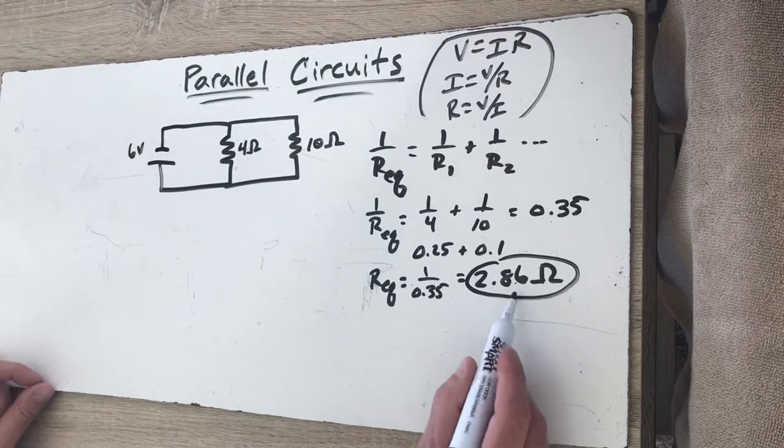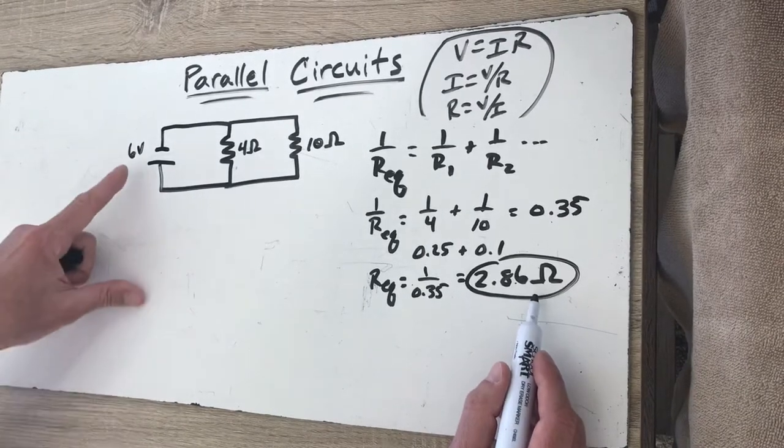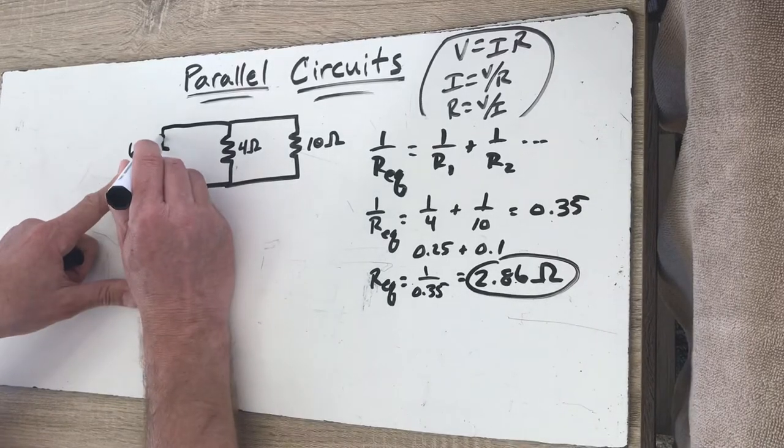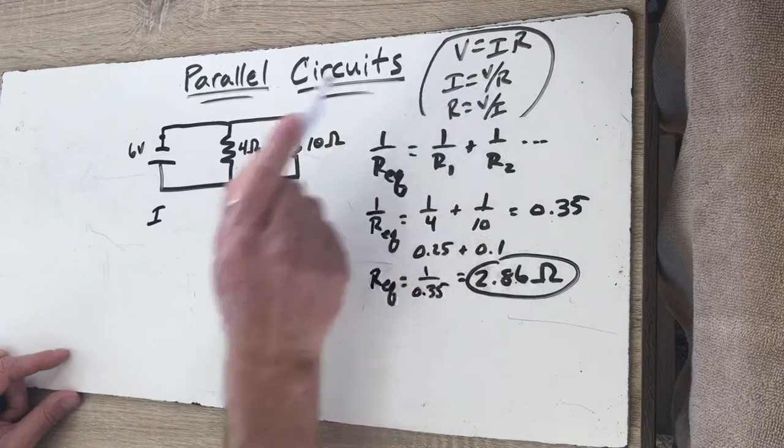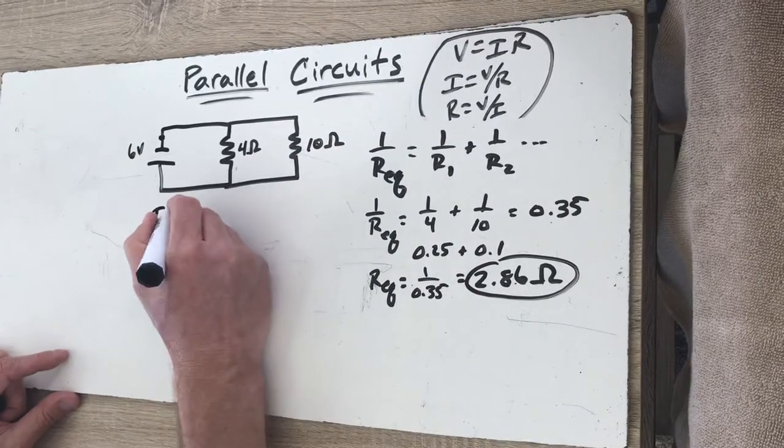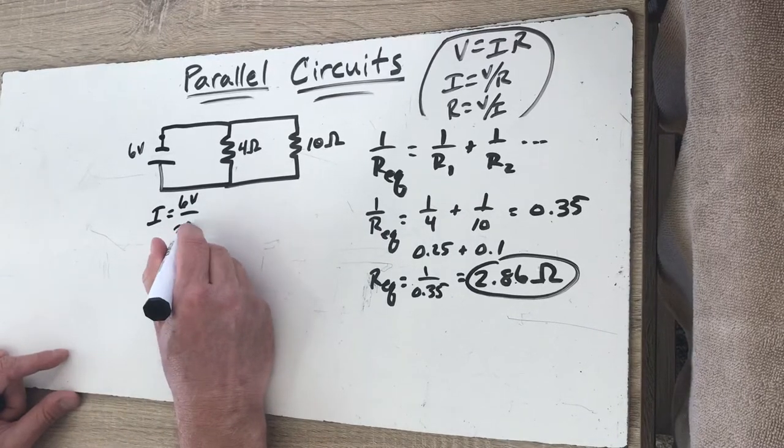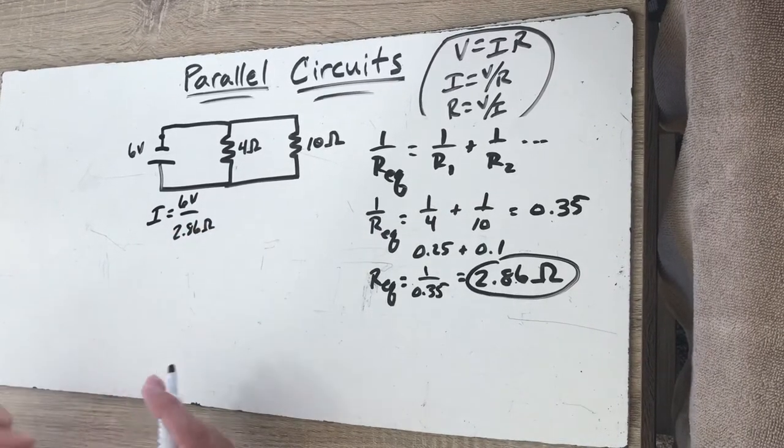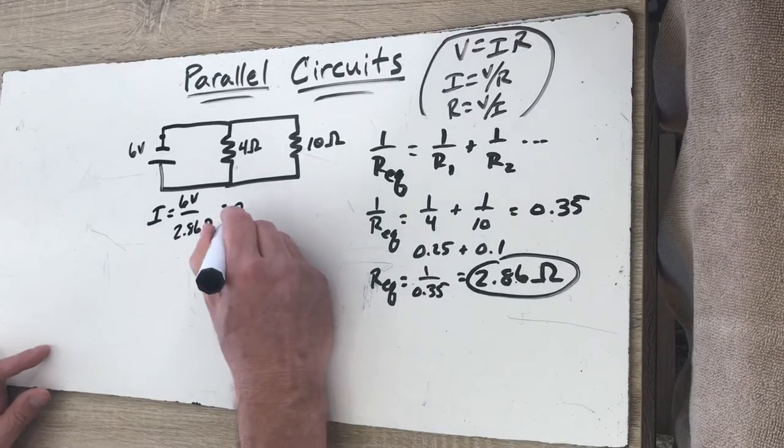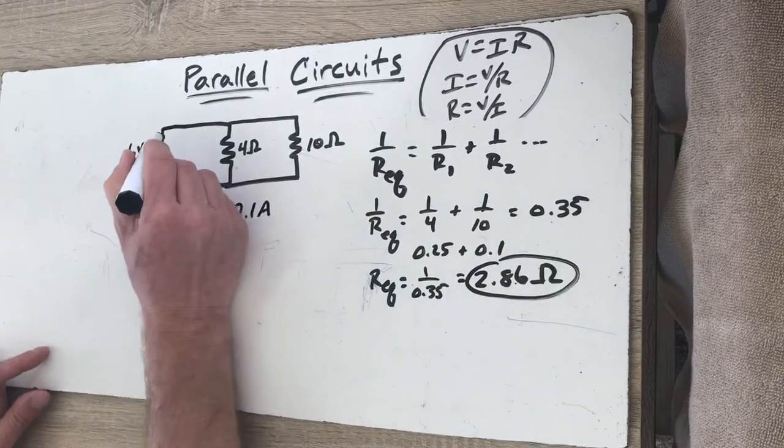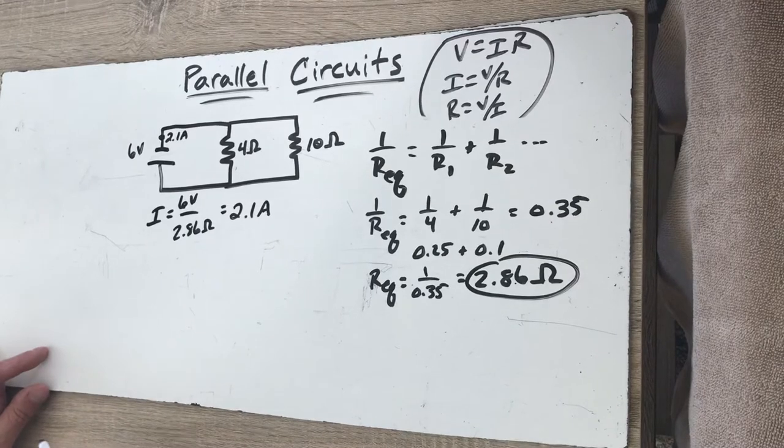So what I want to do with this is I always want to start one of these analyses by finding the total resistance and then I want to see what's happening at the battery, like coming out of the battery. How much current is there? So I'm going to figure out the current. Current is voltage divided by resistance. I'm going to take my total voltage of 6 volts divided by the overall resistance here, which is 2.86 ohms.